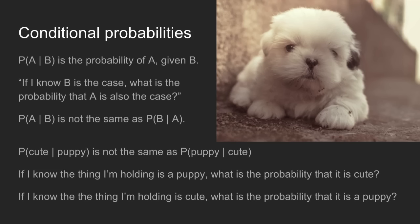Well, it might be a puppy, it might be a kitten, it might be a hedgehog, it might be a small human — there are lots of things it could be. So the probability there is more moderate. These things are not interchangeable in conditional probabilities.